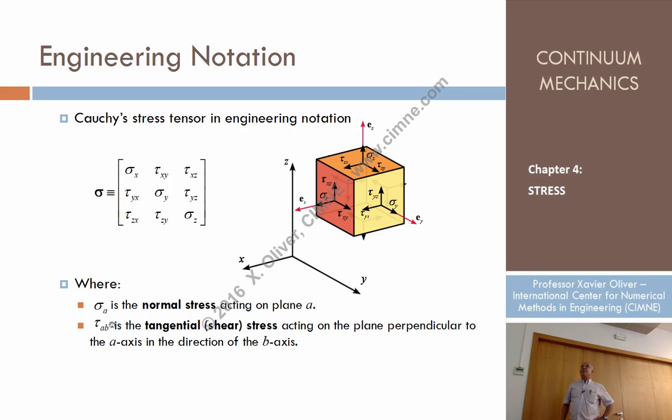And tau ab have two indices. The first index indicates the plane on which the stress is acting: x here, y here, z here. And the second one indicates the direction of this tangential stress. So both are good, both are important. And we will use, essentially, both.